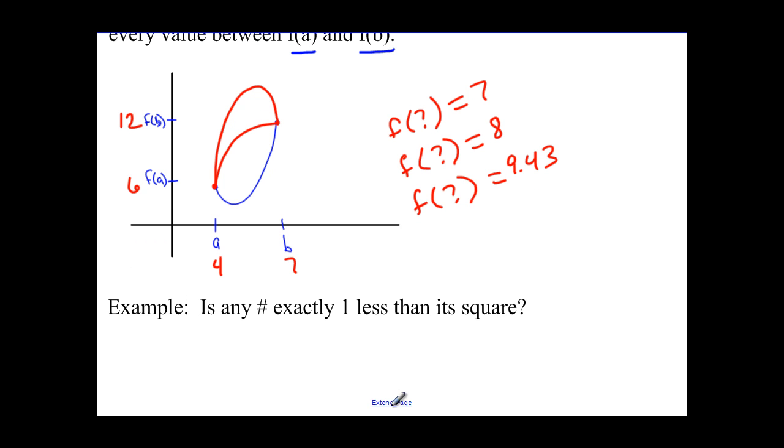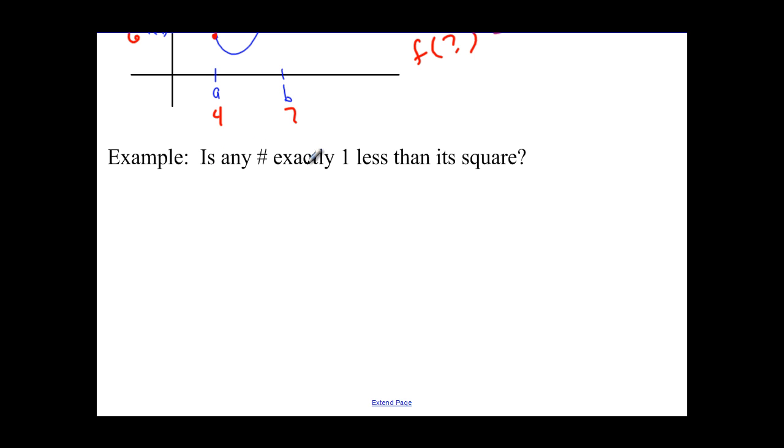Now, we have an example. The example says, is any number exactly 1 less than its square? So is any number exactly x² - 1? So we could have x² - x - 1 = 0 by just subtracting the x over.